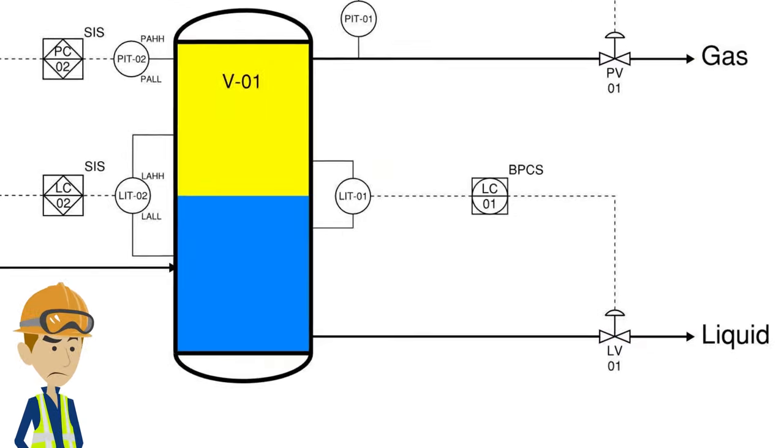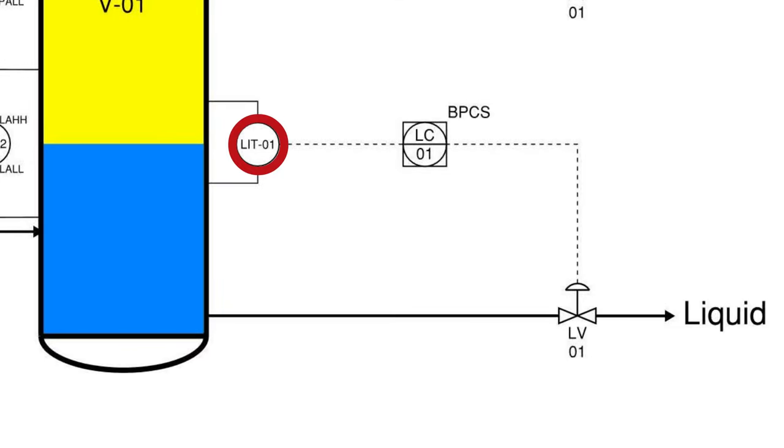Here, the level indicating transmitter, LIT-1, is sensing the level of the vessel, and then transmitting that signal to LC-1, the level controlling function on the BPCS.